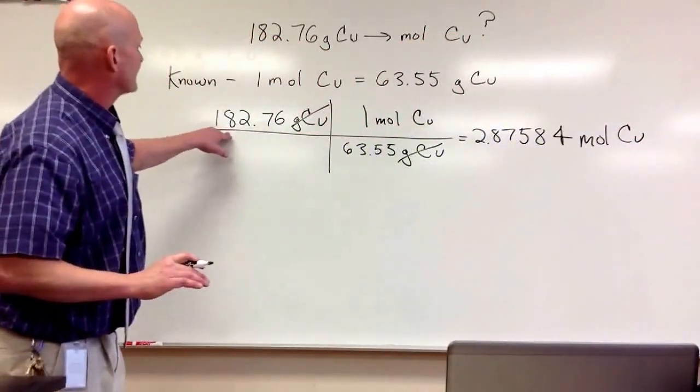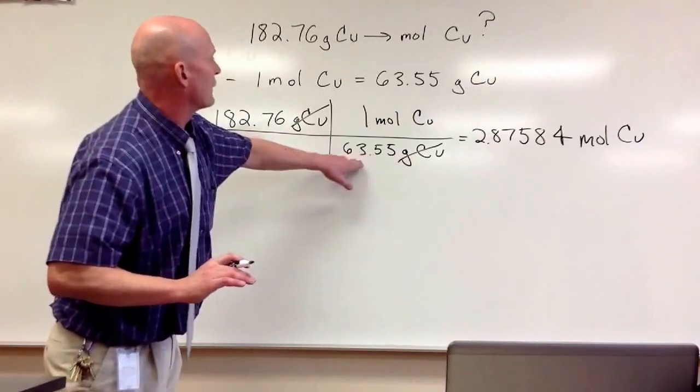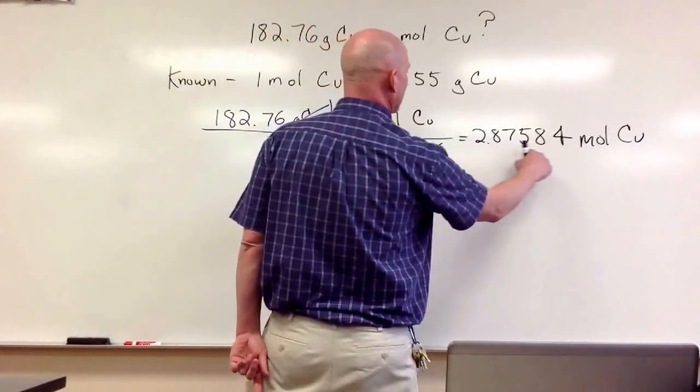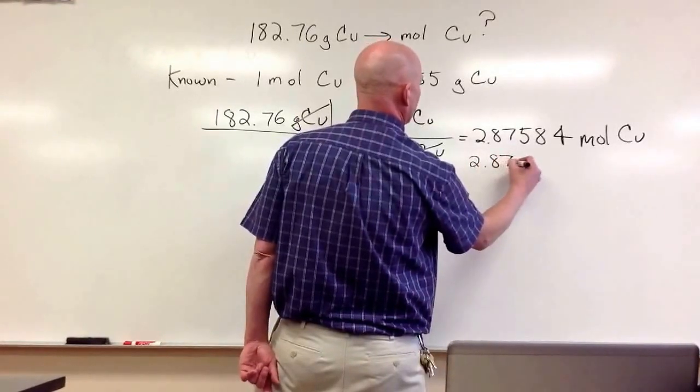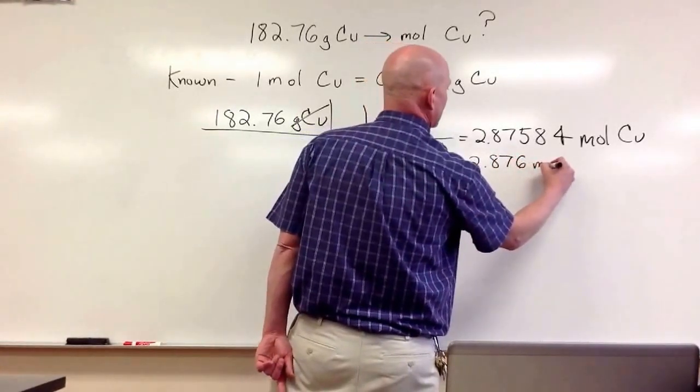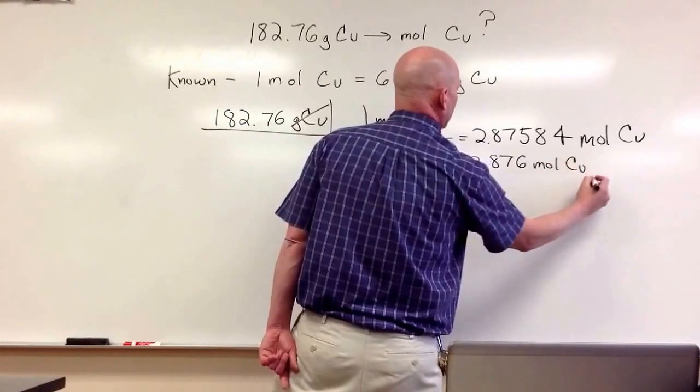Again, in our problem, we have five significant figures and four. So this has to be reported to the least amount, which would be four, which would be 2.876 moles of copper.